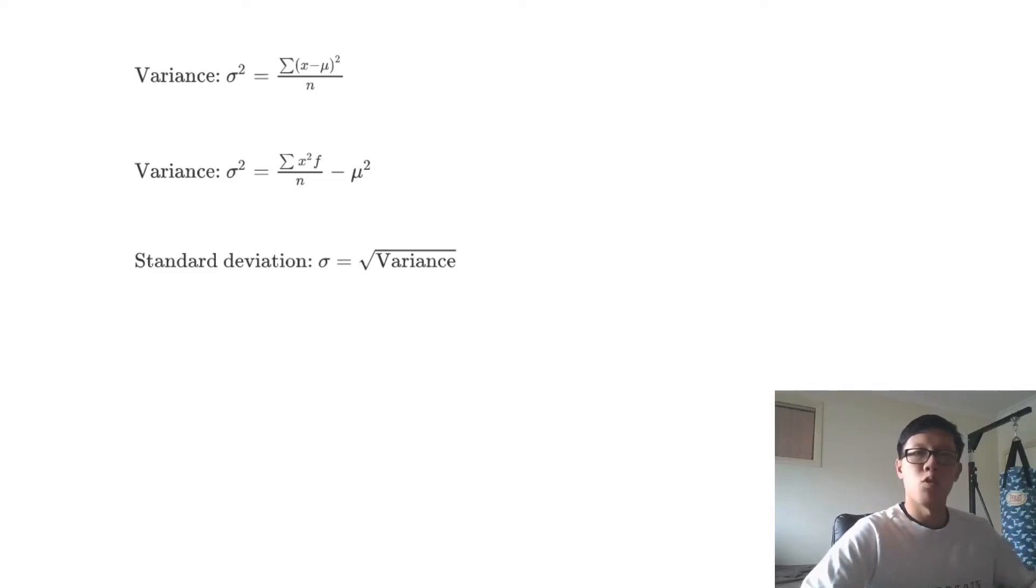In this video I'm going to be covering how to calculate variance by hand. So the first thing we're going to look at is this original variance formula. Variance is the average squared distance away from the mean.